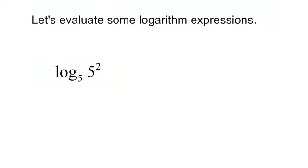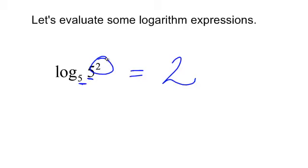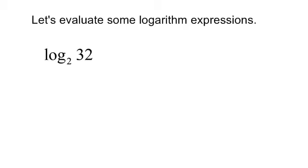Let's evaluate some logarithmic expressions using our properties. Logarithm base 5 of 5 to the second — these match up, so the answer is simply 2. Those properties are pretty important to learn. Logarithm base 2 of 32 may be a little harder — I really wish these two matched up so I could use a property.